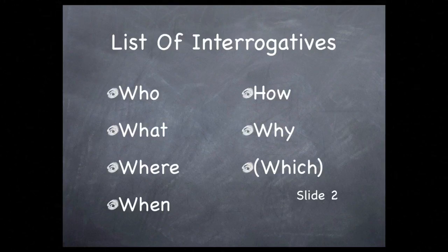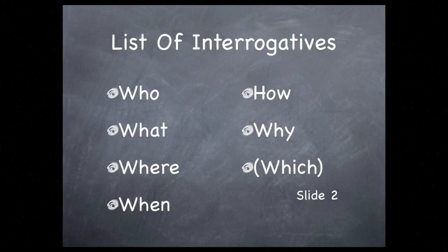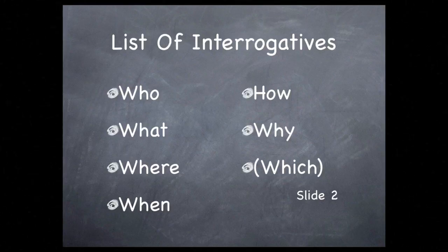Let's pronounce these: who, what, where, when, how, why. Look for a pattern in these words. You may notice that they all begin with the two letters W and H. The single exception is how — it begins with an H and ends with a W.